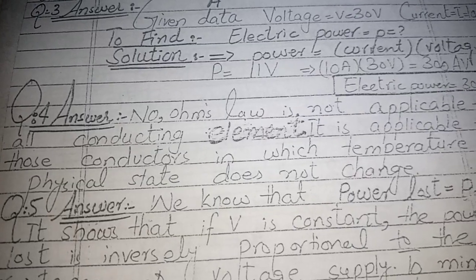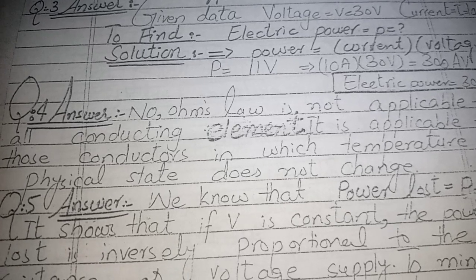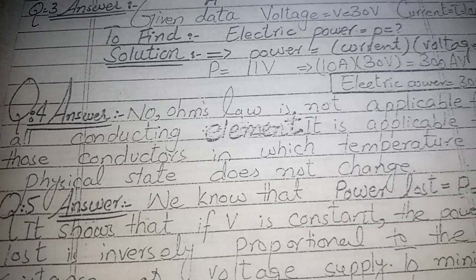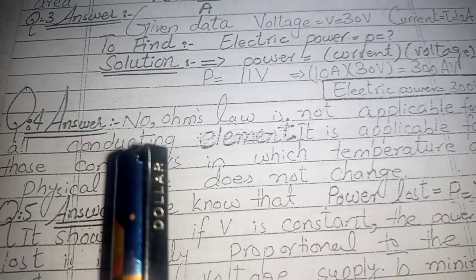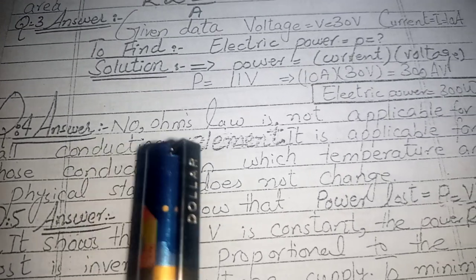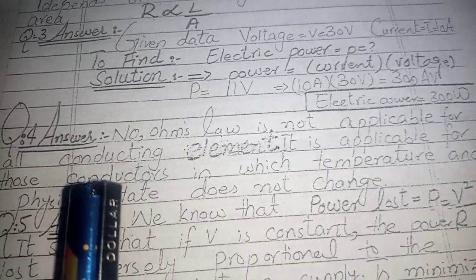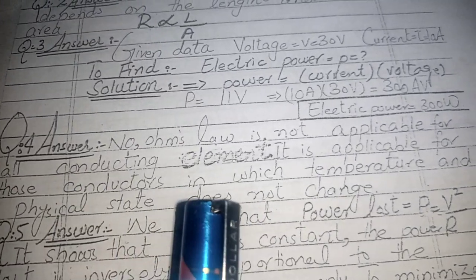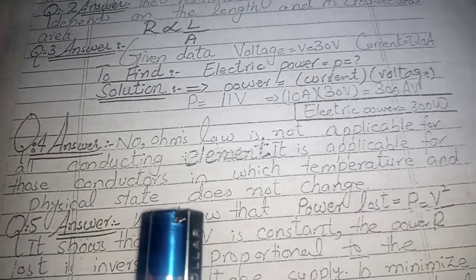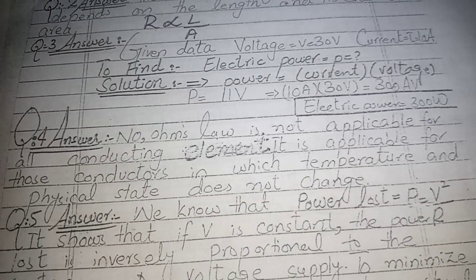Question 4: Is Ohm's law universally applicable for all conducting elements? Ohm's law is not universally applicable for all conducting elements. It is applicable only for those conductors in which the temperature and physical state do not change.